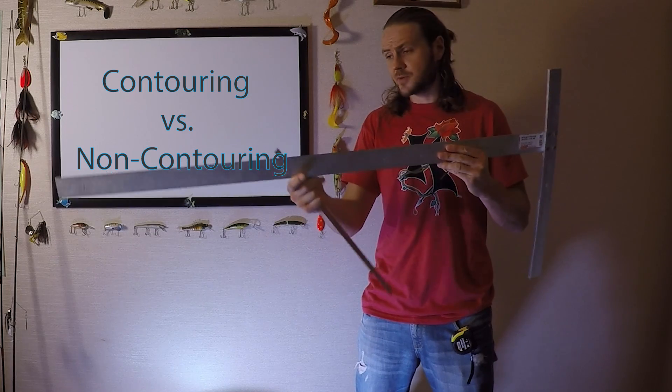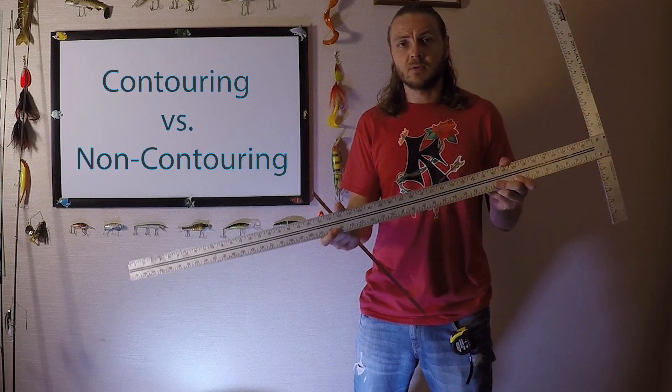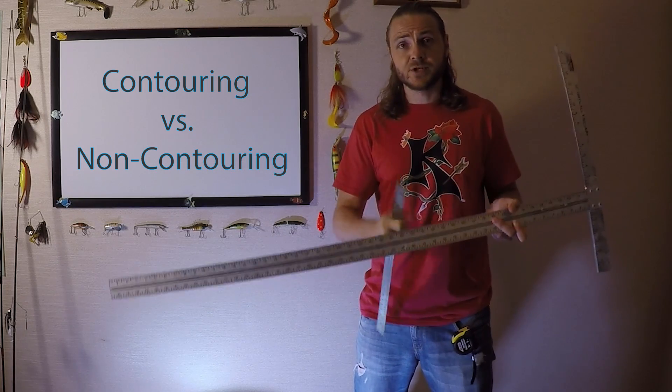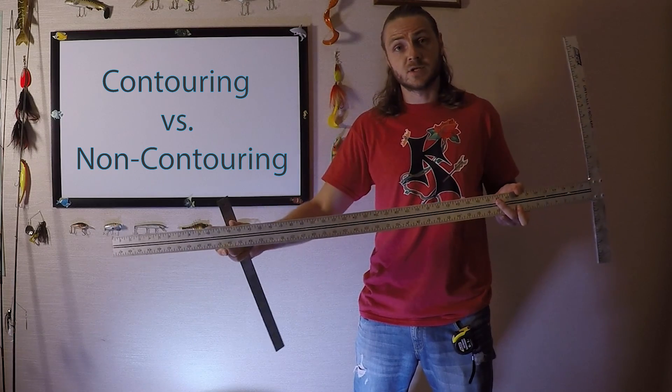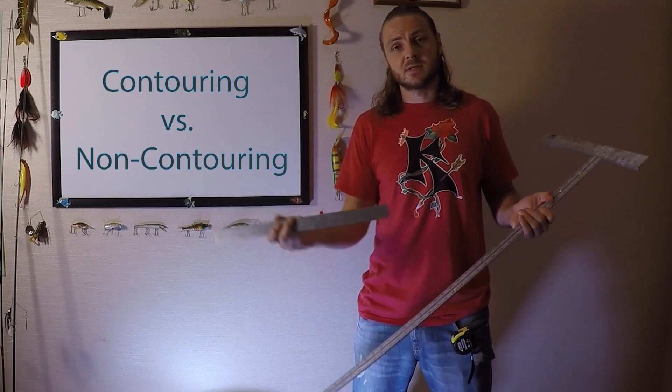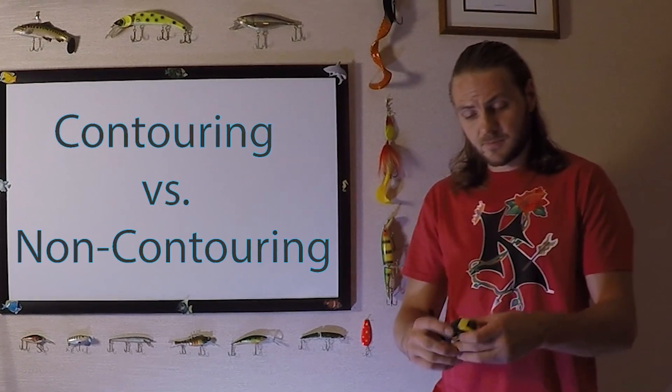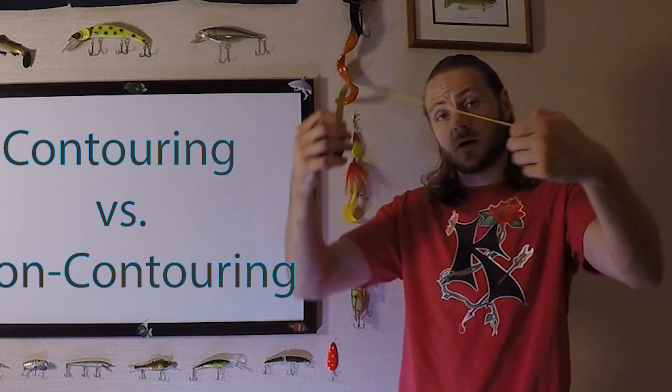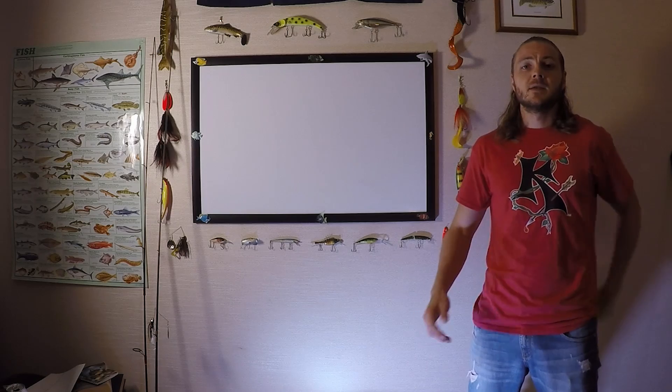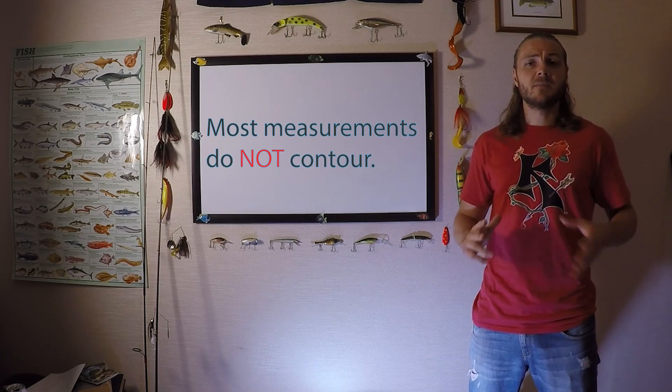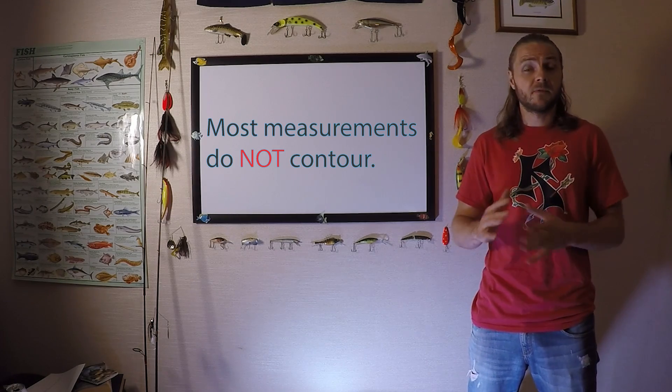So a non-contouring measure would be this drywall T-square. It's rigid and hard, and it's not going to contour to the shape of the fish. Same with this little ruler. Or do you need to use something that's going to contour, such as a measuring tape? 95% of the time you're not going to be making measurements that contour to the shape of the fish.